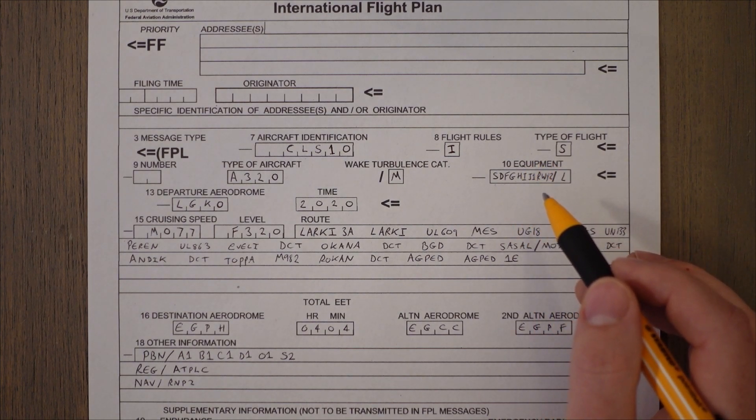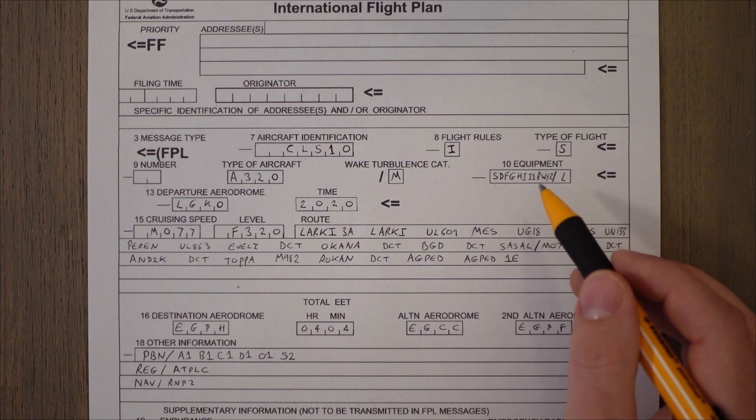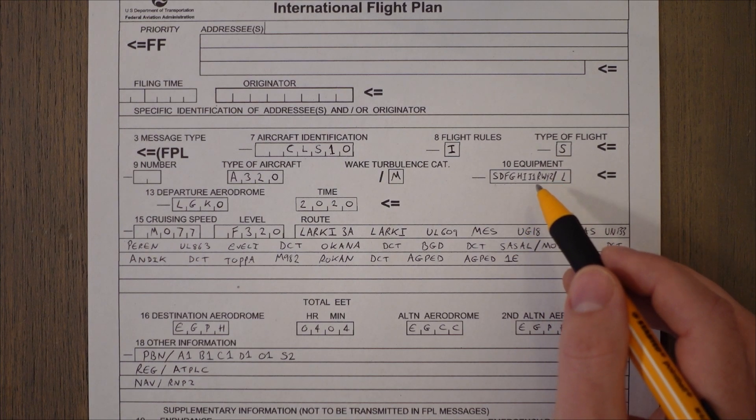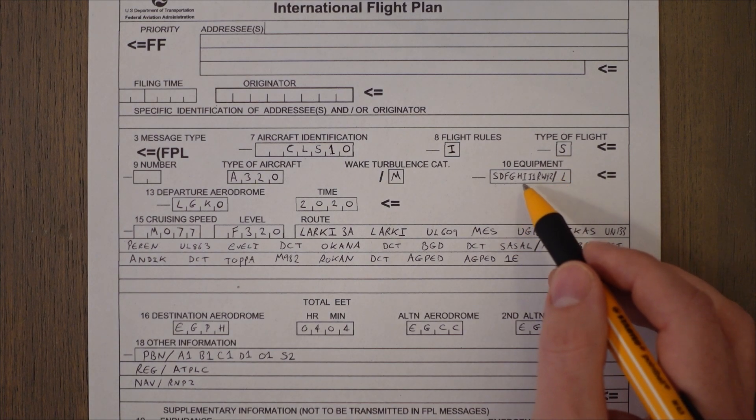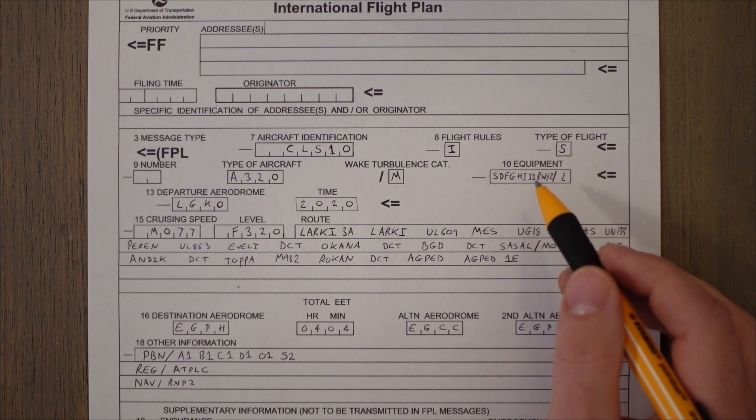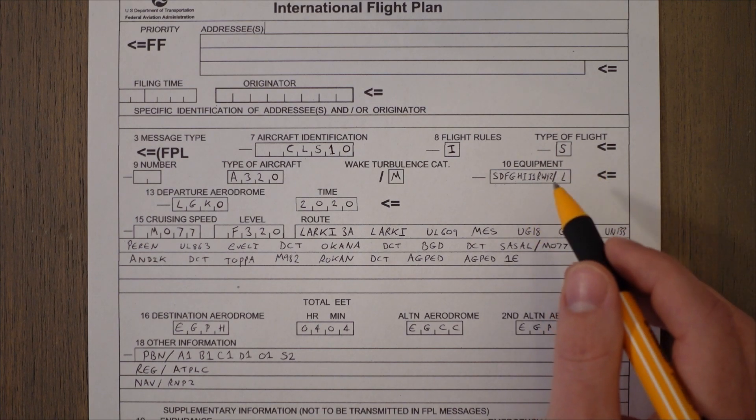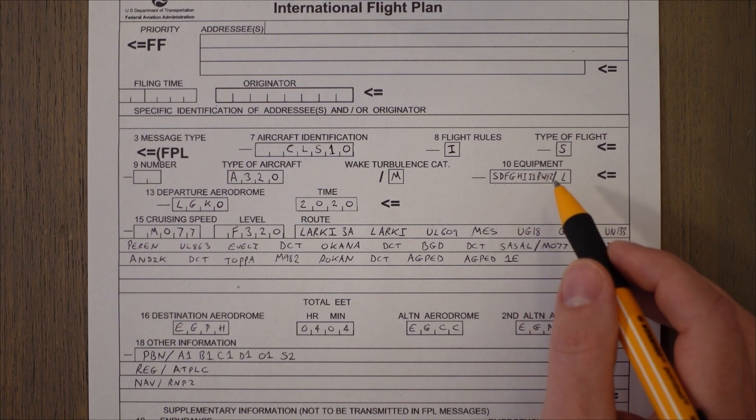This is quite an important section because if they tell you to fly to a certain place where you need HF radio and but you don't have it, then you've told them ahead of time basically. You've said we don't have a high frequency radio so we can't fly into that airspace that needs a high frequency radio and hopefully they won't give it to you.